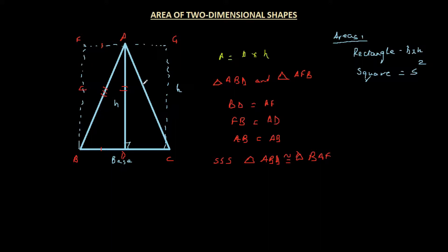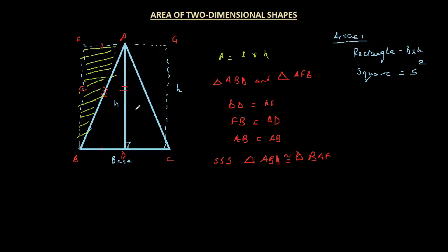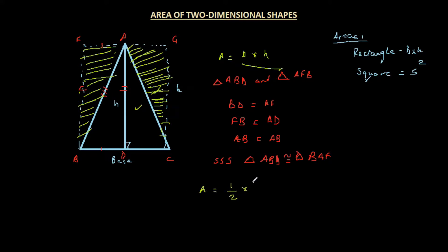Since the two triangles in each rectangle are congruent and have equal areas, the triangle we want is just half of each rectangle. We exclude the extra triangle from both sides, meaning the area of the triangle is just half of the full rectangle's area. So the area of a triangle is half times base times height.